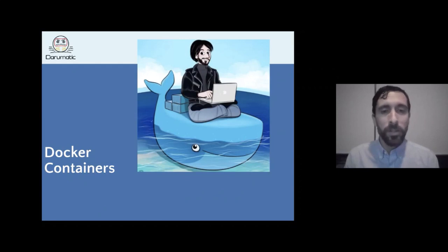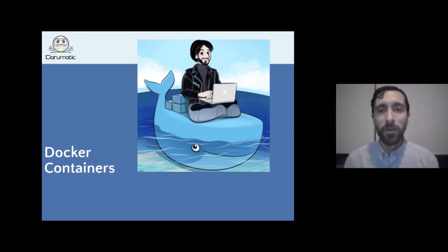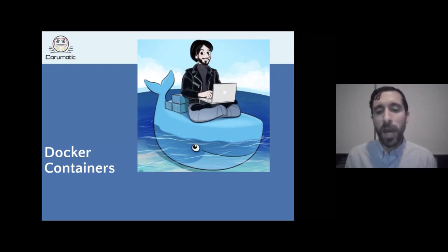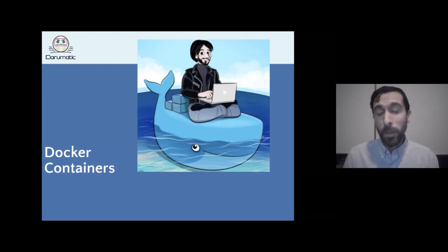In 2013, Solomon Hykes gave a five-minute talk at PyCon presenting the future of Linux containers. He cleverly combined namespaces and cgroups to make Docker containers easy to use, allowing people to isolate a configuration and use it on any other machine. We no longer need virtual machines — you can run many containers within a single machine because they are lightweight and very fast.